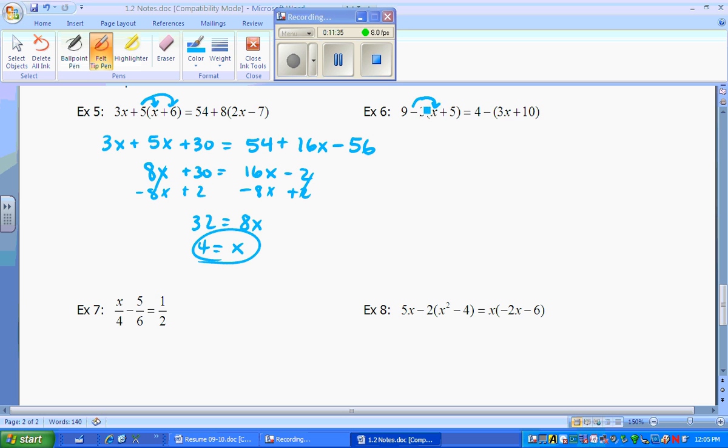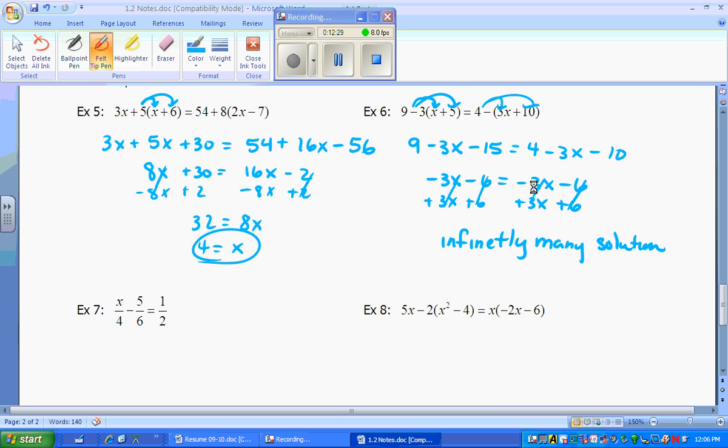Example 6, you have to distribute a negative 3. So the 9 just comes down. It becomes a negative 3x minus 15 equal to 4. It comes down. A negative 1 is being distributed. So it becomes negative 3x minus 10. Simplify both sides. This side becomes negative 3x minus 6, which is equal to over here, negative 3x. 4 and negative 10 make negative 6. Well, both sides are the same. So if I add 3x over, and then I add 6 to complete this way, everything cancels out. So we have infinitely many solutions. And you knew this when both sides were equal to each other in the beginning. So all the variables you choose for x would work.